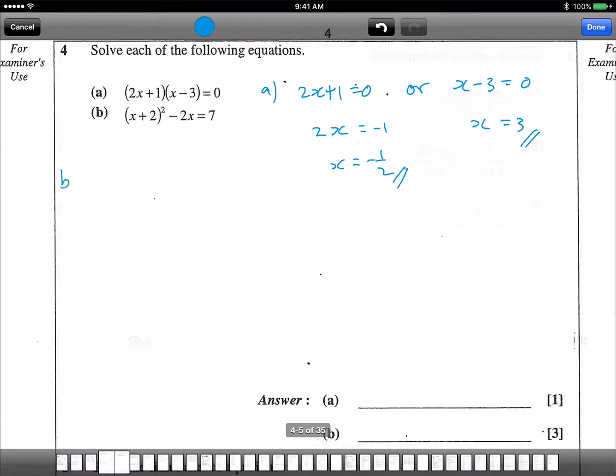Now part (b). For part (b) you have to expand this because it's x plus 2 square. So using your special algebraic rule a square plus 2AB, so it's x square plus 4x plus 4 minus 2x equals to